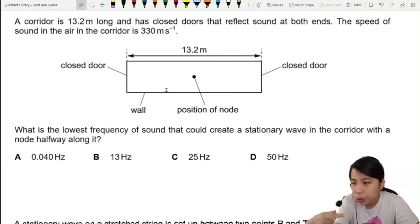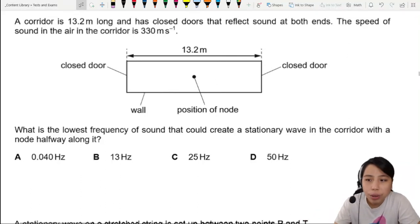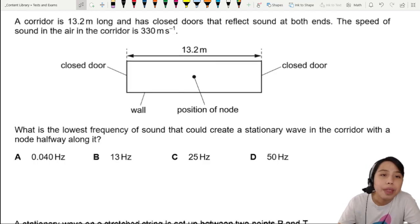A corridor is 13.2 meters long and has closed doors that reflect at both ends. The speed of sound in the air is 330 meters per second. Here's a clue: closed doors that reflect sound at both ends.